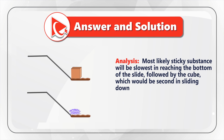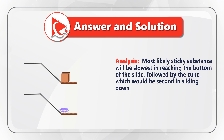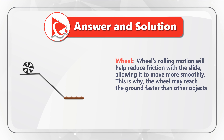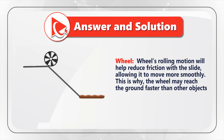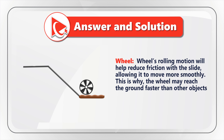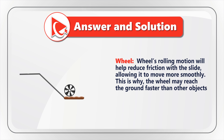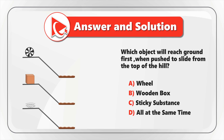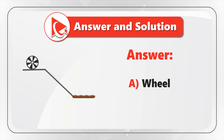Based on this, I think most likely the sticky substance will be the slowest in reaching the bottom of the slide, followed by the cube. So, as you might have guessed, I am putting my bets on the wheel. The wheel's rolling motion will help reduce friction with the slide, allowing the wheel to move more smoothly. This is why the wheel may reach the ground faster than all other objects, and the correct answer is Choice A: wheel.